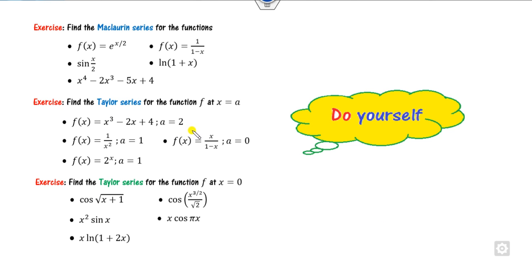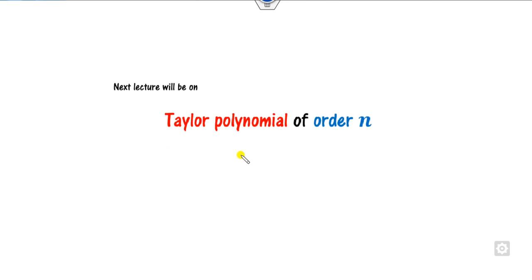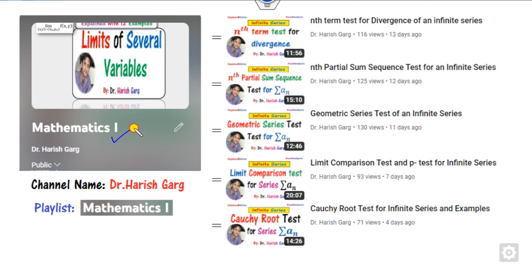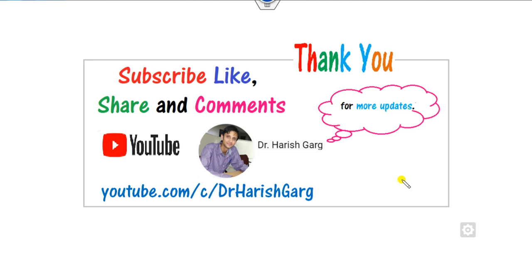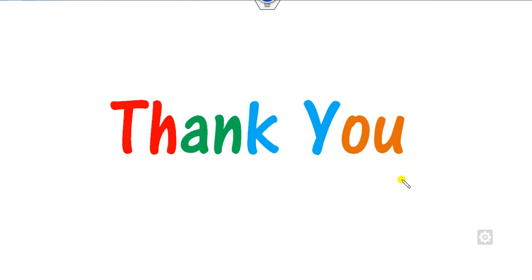Here are 15 exercise questions for you to practice. These include polynomials, product rule examples where you can use substitution, and composite functions like cos(y) where you start with cos(x) and replace. In the next lecture we will cover Taylor polynomials of order n. You can follow my playlist Mathematics 1 on the Dr. Hrish Gaur channel for all previous lectures on infinite series. Please like, share, and comment. Best of luck, students!